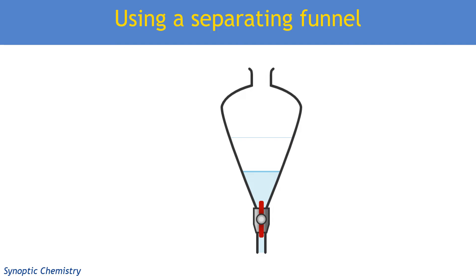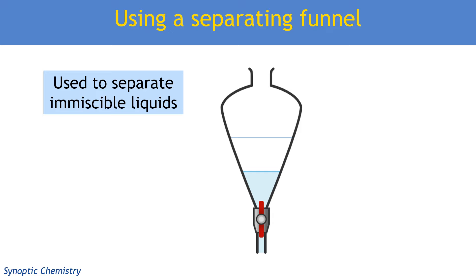So we use something called a separating funnel. It's used to separate any immiscible liquids. They could be cylindrical in shape, the same width all the way down, but they're quite commonly shaped like the one shown here, which is larger at the top and looks more like the shape of a funnel. It's got an area where we can put a stopper in the top, which means we can shake it up. When we let these liquids settle, they will form two layers because they're immiscible and they separate according to density.